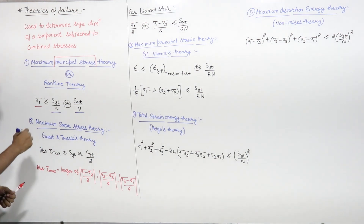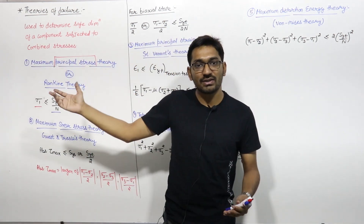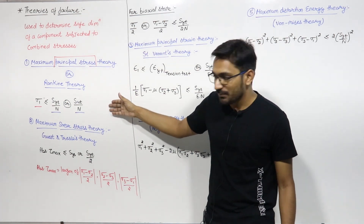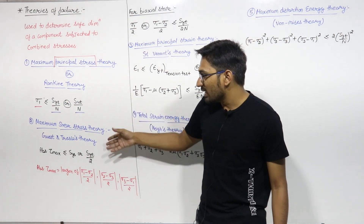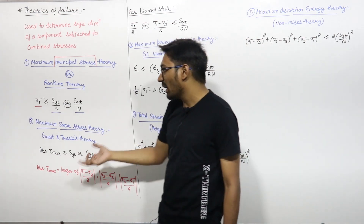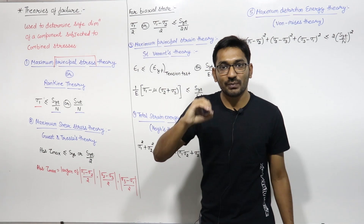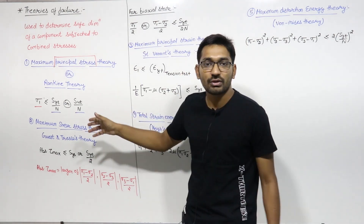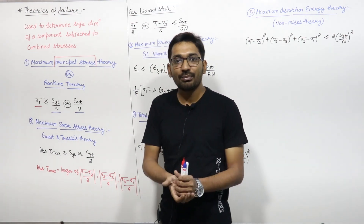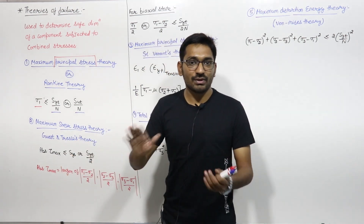If you have to design within the elastic region, take SYT; if you have to design for fracture or failure, take SUT by N. SYT and SUT will be given; N is the factor of safety. Sigma 1 can be calculated as we already studied in combined stresses. The second theory is the maximum shear stress theory, also known as Guest and Tresca's theory. These theories are used to design the component.